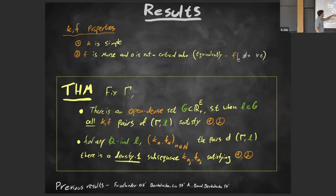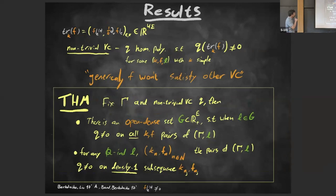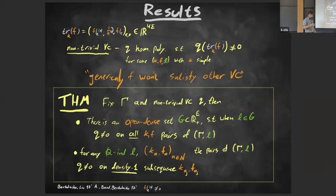This generalizes results by Friedlander, who proved residual simplicity, and by Band and Liu, who proved property (2) in the residual case. The open dense result is stronger. The complement is a positive co-dimension algebraic variety, which gives you more than full measure.